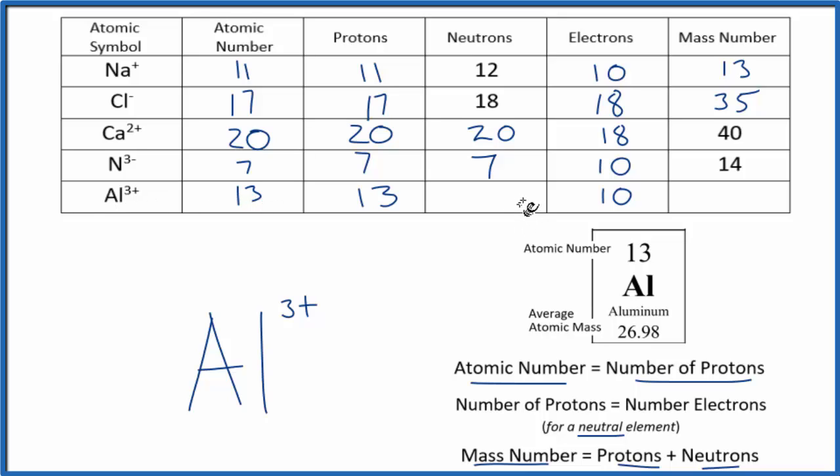We have a bit of a problem here, though. We have neutrons and mass number, but we can't figure either one out. We don't have enough information. When that happens, go to the periodic table. This 26.98 will round that to 27. So 13 plus 14, that would equal 27.